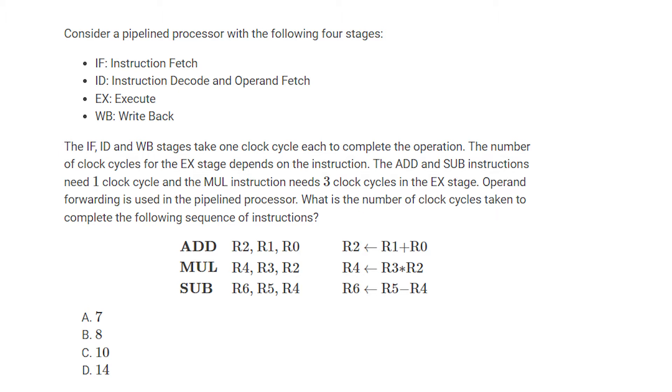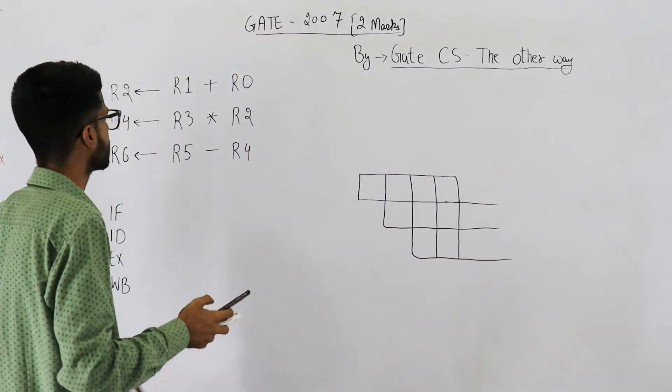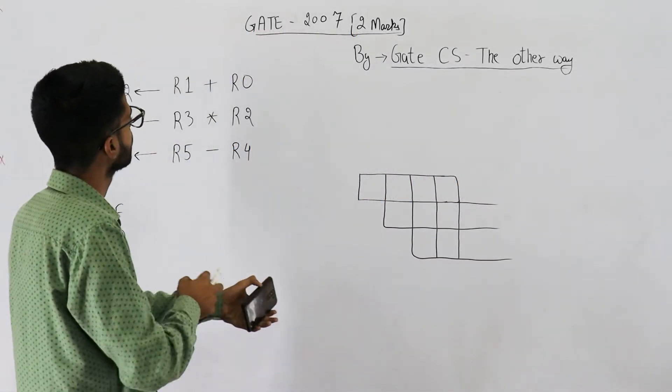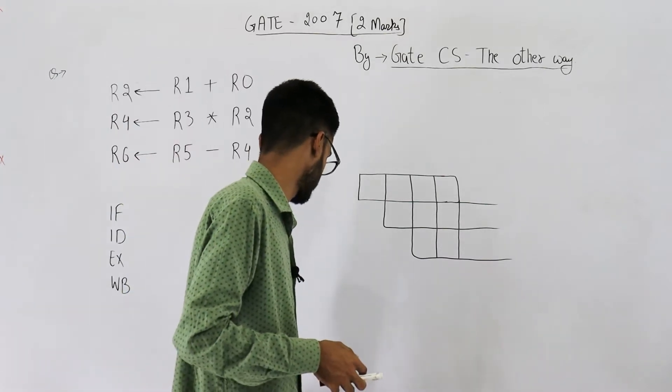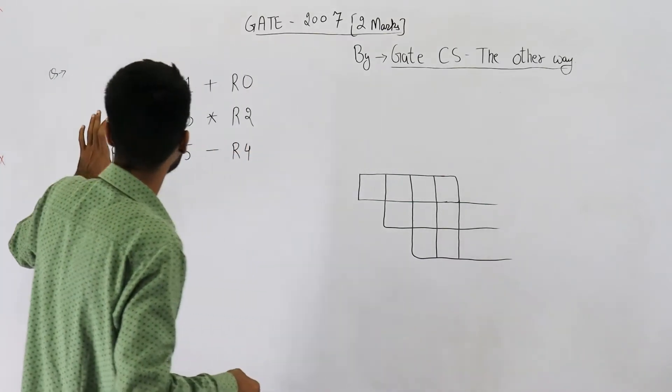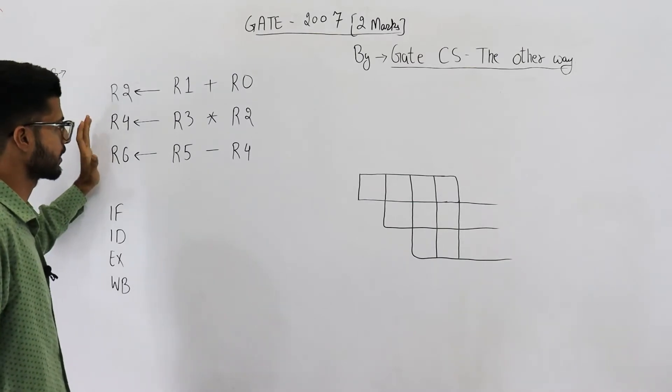Operand forwarding is used in the pipelined processor. What is the number of clocks taken to complete the following sequence of instructions? Then you can see the sequence, there are actually only three instructions. Also have a look at the four options given in the question.